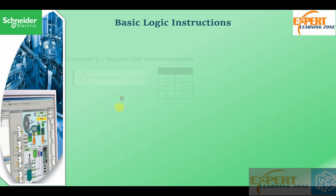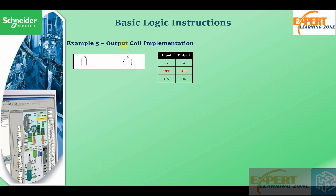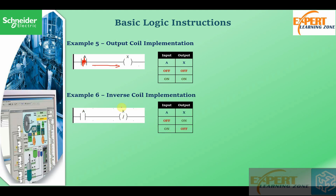Here is an example of coil implementation. When the input contact is off there is no flow, and when it becomes energized and closes, the coil becomes energized and logic flows to the X variable, which becomes on. For the inverse coil, when there is no logic on the input — a zero — the associated X variable takes the on state. When we have a logic one on the input, the allocated variable becomes false and the coil becomes off.